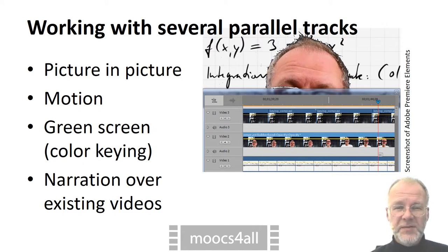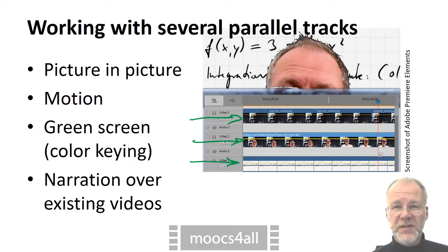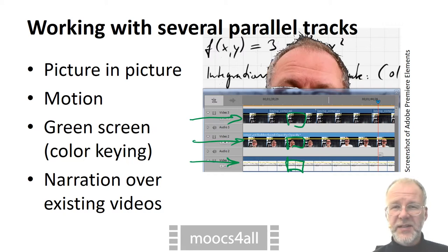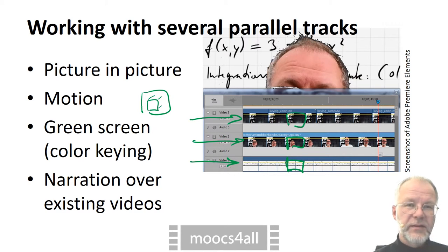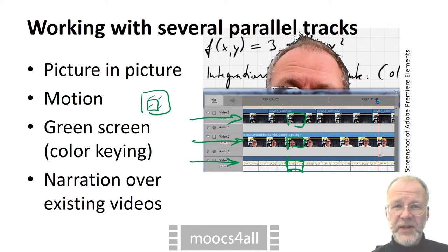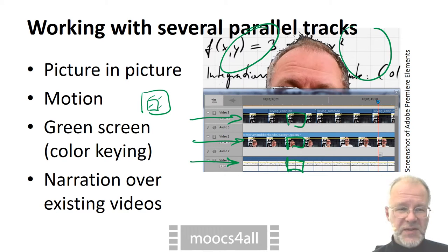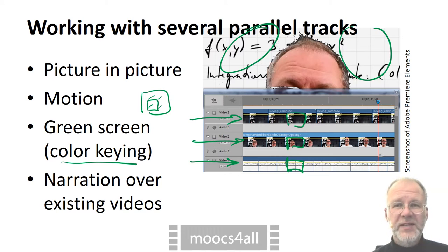Video editing software cannot only put clips into any order, it can also place several clips in parallel. The technical term is compositing — the program forms a composite of several images. This is what you use to place a talking head onto slides. Images and video clips can often also follow motion paths, to bring different parts of an image into view. There are several ways of removing the background of a clip so that clips behind become visible — the green screen effect belongs to these, and the technical term for this is color keying. A very different application of using several tracks in parallel is to add audio tracks, for instance to comment on what happens in a video taken from a physics experiment.